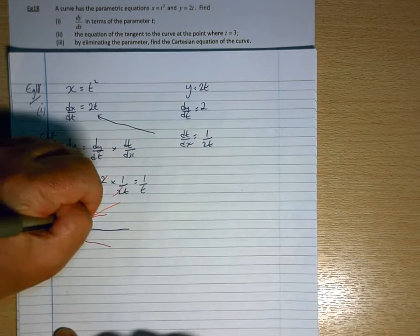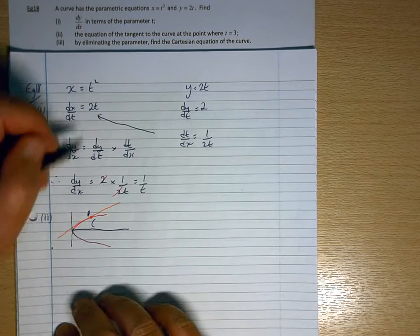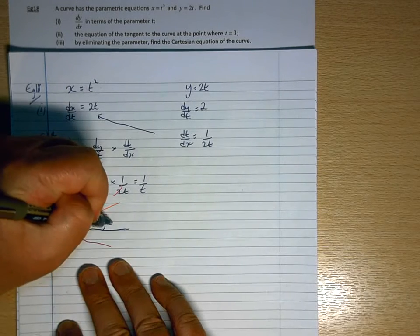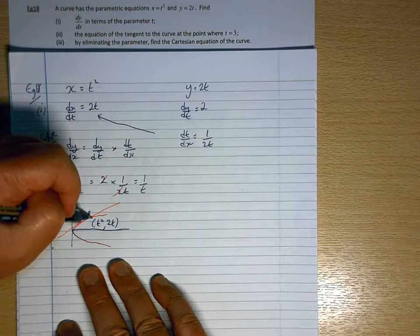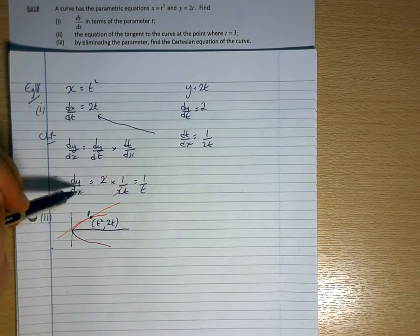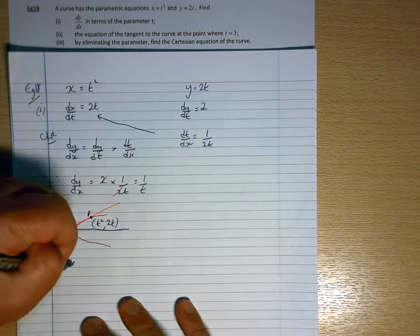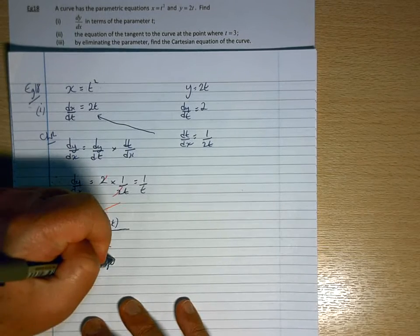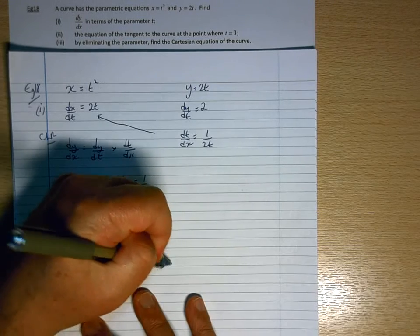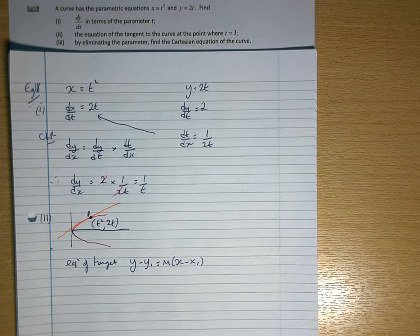Now the general point on that curve would be x-coordinate comma y-coordinate, except we've got that in terms of x-coordinate t squared, y-coordinate 2t. So there's the point where the tangent is. I've got the gradient in terms of t. So the equation of the line will be y minus y1 equals m times x minus x1. So that's the equation of the line that you met in AS.